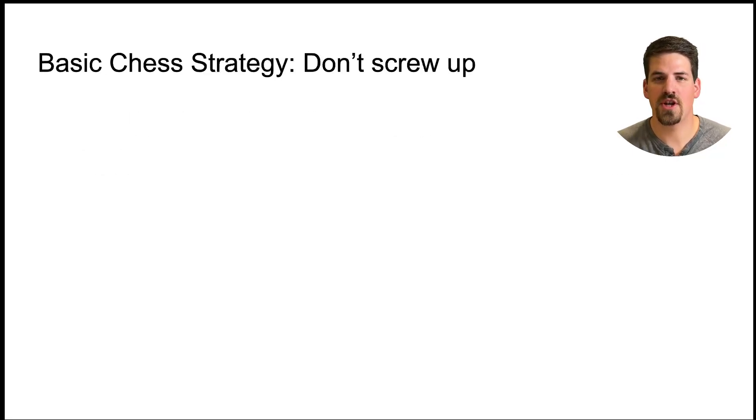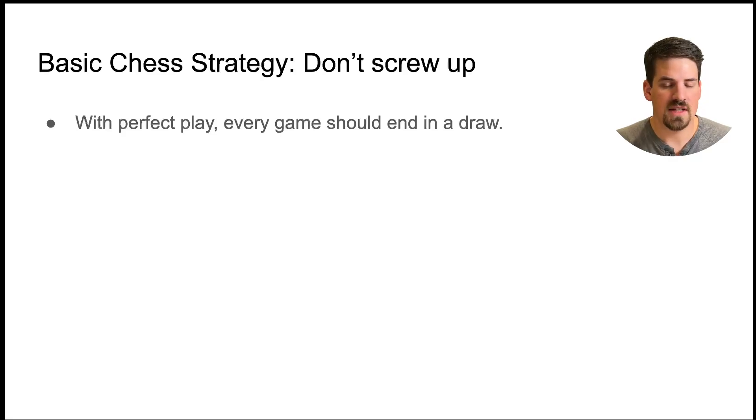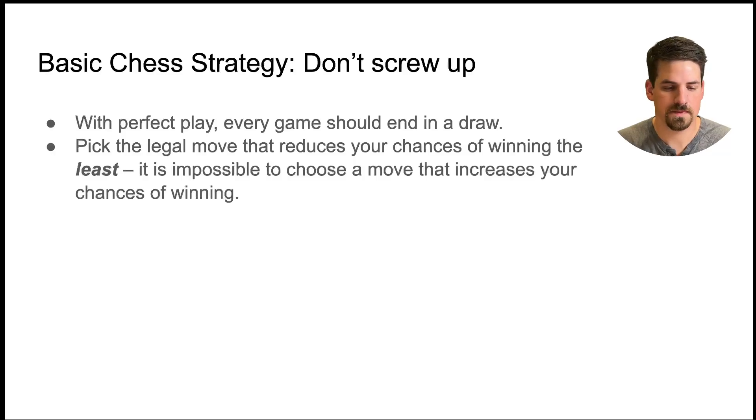So first to sum up the general strategy of playing the game of chess, if I had to sum it up in a couple words I would say don't screw up. Chess is a game where with perfect play every game should end in a draw, perfect play from both sides. The goal for each move or each turn of the game is to pick the legal move that reduces your chances of winning the least. In other words it's impossible to choose a move that increases your chances of winning. You can only choose a move that's least damaging to your position or maintains your current position.